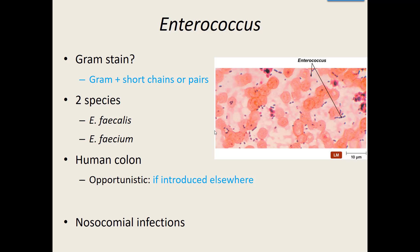However, if they get introduced somewhere else, they cause an opportunistic infection. For example, if they get into an open wound or into the urinary tract — which isn't too far away — it's a top cause of urinary tract infections. Enterococcus bacteria are a top cause of healthcare-associated or nosocomial infections — about 10% of healthcare-associated infections are caused by Enterococcus. It's interesting how many fecal-driven bacteria are top causes of healthcare-associated infections.